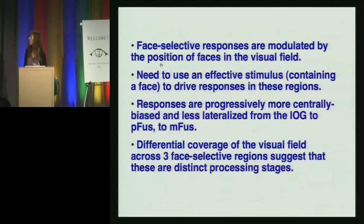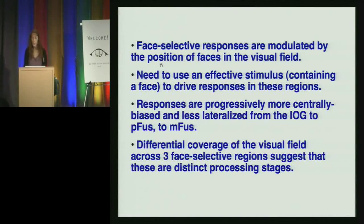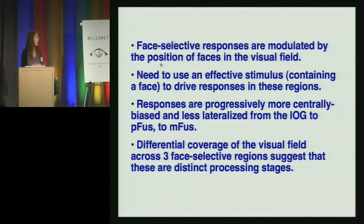So, what do we have so far? We find that contrary to the prevailing model, the higher-order face-selective regions are modulated by the position of faces in the visual field. But in order to see these position modulations, you have to use an effective stimulus — if you're looking at face-selective regions, you need to have a stimulus that has a face in it. Furthermore, we find evidence for three distinct stages of face processing in the human temporal lobe which have differential coverage of the visual field, where responses become more centrally biased and less lateralized as you extend the processing stream from the inferior occipital gyrus through the posterior fusiform to the mid-fusiform regions.